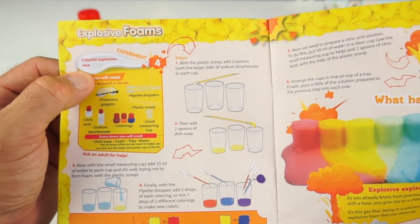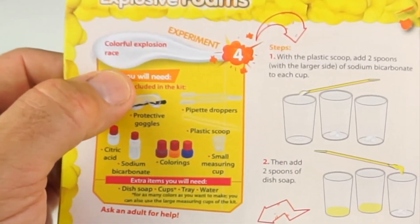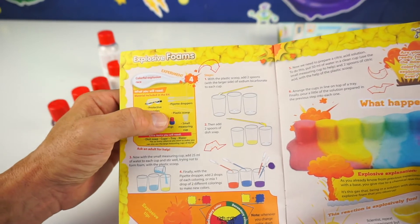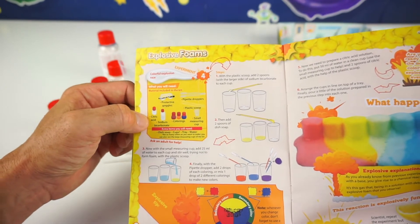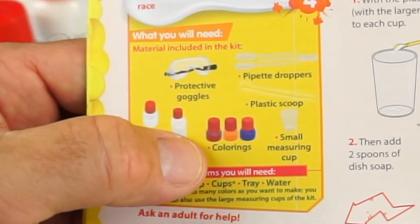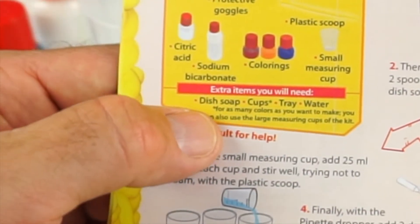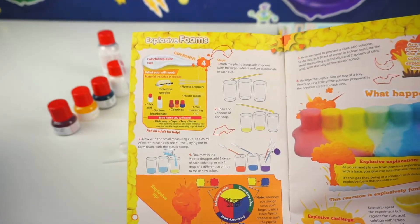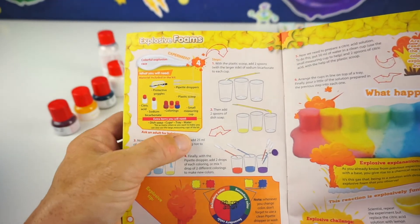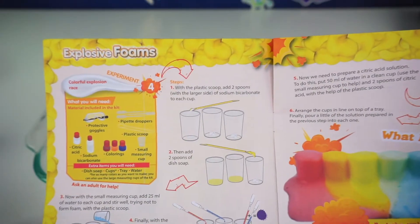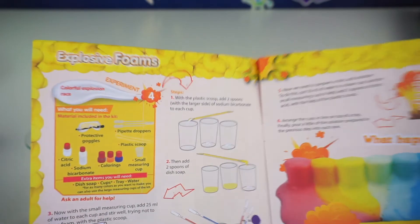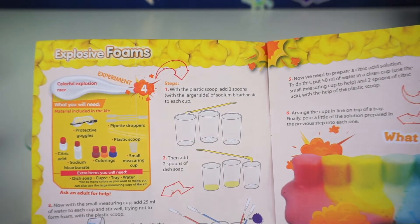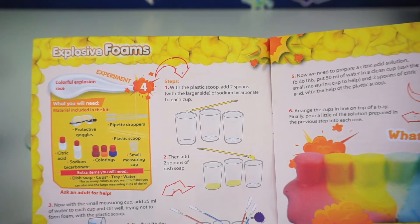Our first experiment is number four. And it's called colorful explosion race. Here are some of the things that you will need. Your protective goggles. The pipet droppers. Plastic scoop. Citric acid, sodium bicarbonate. The colorings. Small measuring cup. And some extra items with dish soap. Which I have right here. And we have cups, trays, and water. Okay, so our first step would be to, with the plastic scoop, that's this, add two spoons with each large side of sodium bicarbonate to each cup.